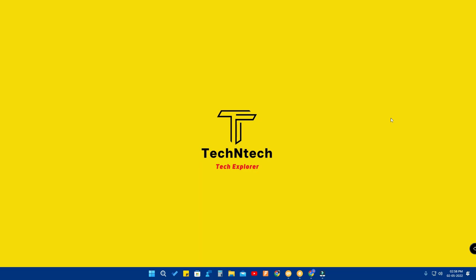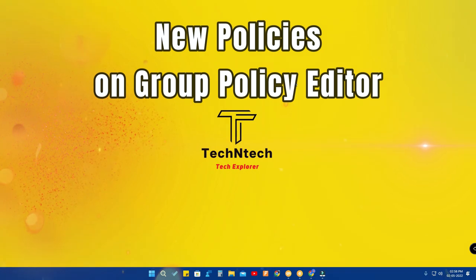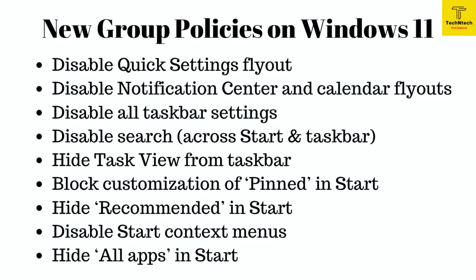I'm going to share some of the new updates of this build on Windows 11. First, Windows has added some new policies in the Group Policy Editor — up to nine different policies: disabling Quick Settings flyout, disable Notification Center and Calendar flyout, disable all taskbar settings, disable search across Start and the taskbar, hide Task View from the taskbar, block customization of pinned items in Start, hide Recommended in Start, disable Start context menus, and hide all apps in Start.